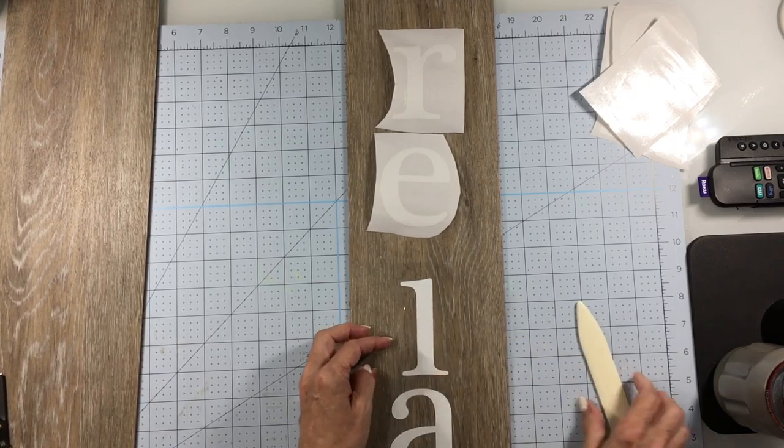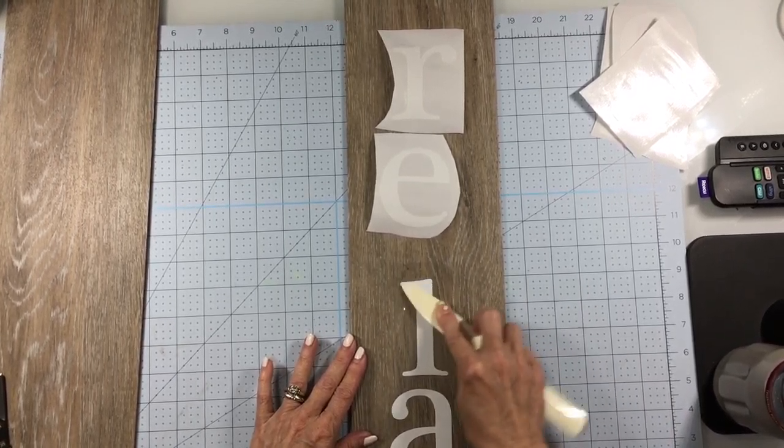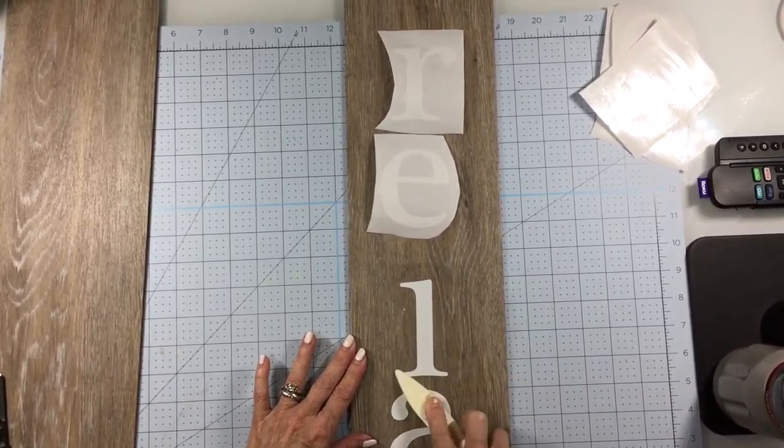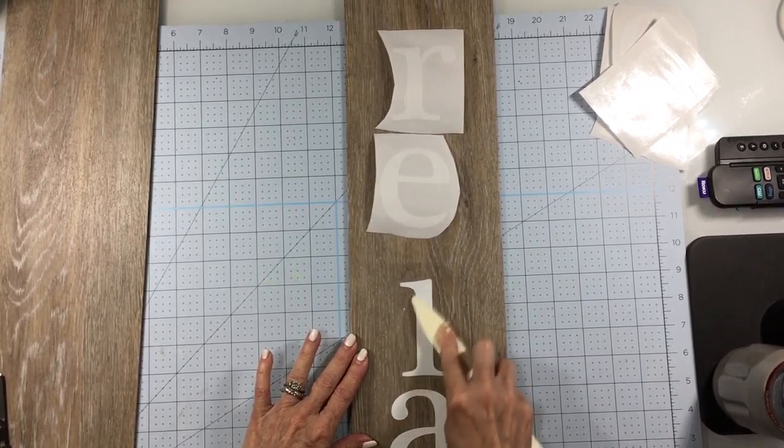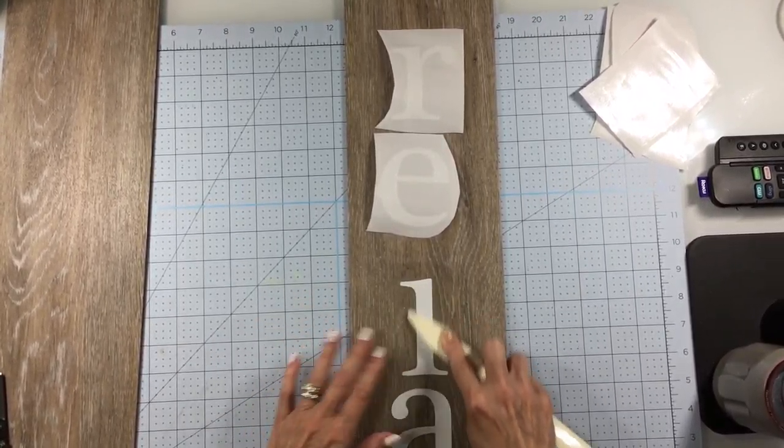Place it onto the board, then burnish. You can use a credit card or Cricut has a flat tool that you could use.